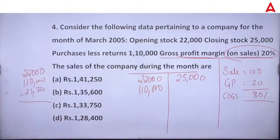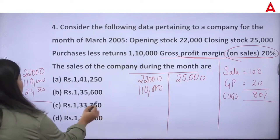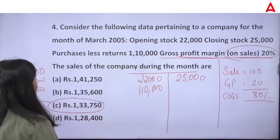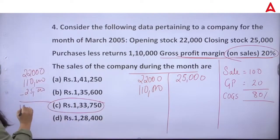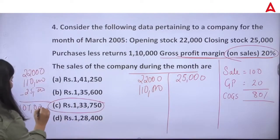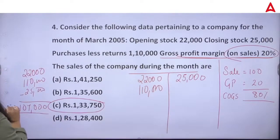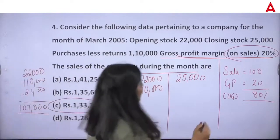You want to find the sales value. So, the cost of goods sold is $1,07,000, which is 80% of sales. You can adjust it to find 100% — that is the full sales value.